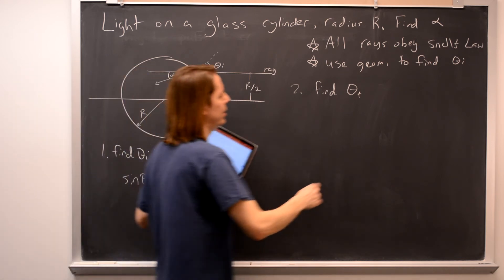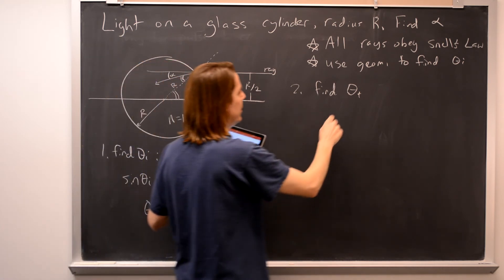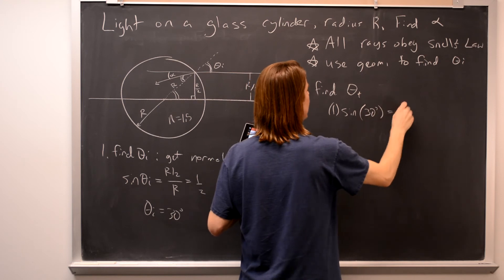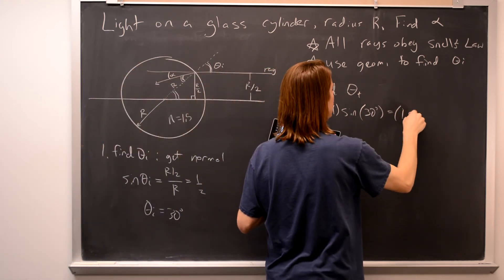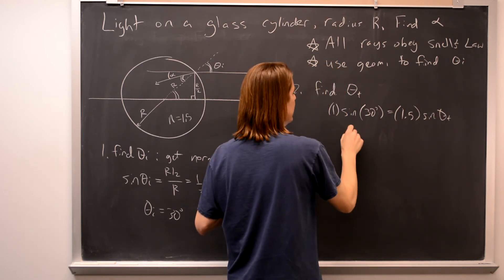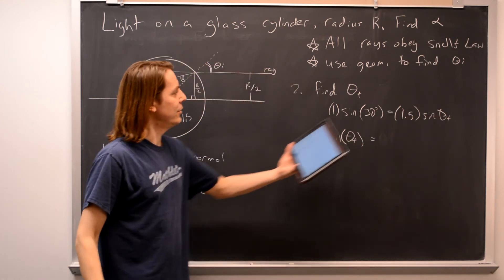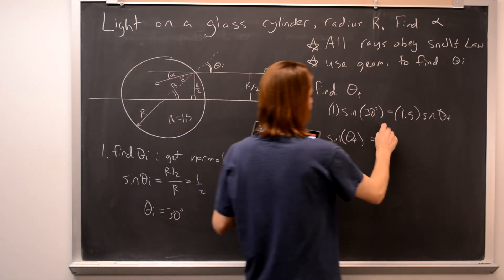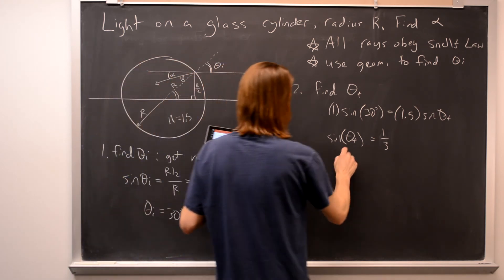We get that from Snell's Law. So n1 is just air, right? So we could say 1 times the sine of the incident angle, 30 degrees, equals n inside, 1.5, times the sine of theta t. So sine of theta t equals one half. We know that's going to be one half. Divided by 1.5 is 0.333, it's basically a third. So you solve that, and you get that theta t is 19 and a half degrees.